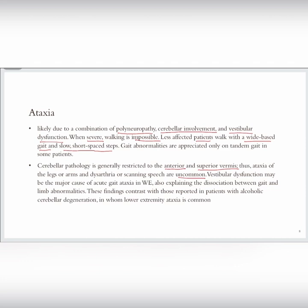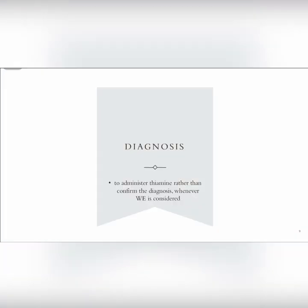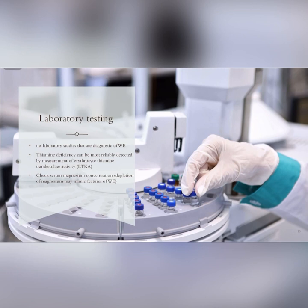If we suspect Wernicke encephalopathy, it is better to do therapeutic diagnosis by administering thiamine rather than other kinds of investigations. However, there are some laboratory tests to detect thiamine deficiency, such as measuring erythrocyte thiamine transketolase activity, and we can also check serum magnesium concentration because depletion of magnesium can make features of Wernicke encephalopathy.